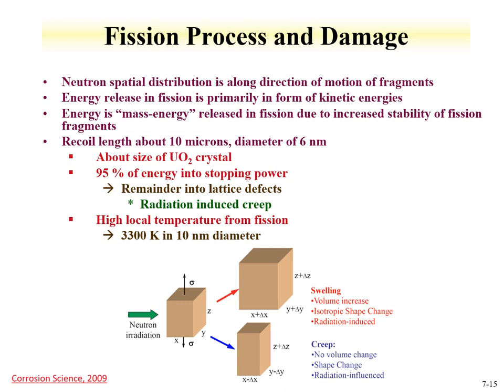Another important aspect of fission is radiation damage. Fission products recoil about 10 microns in UO₂ with a very high local temperature of almost 3000°C in a 10-nanometer diameter region within the fuel. Types of irradiation damage include swelling, where all axes of a material increase, and creep, where shape changes with no volume change. There is significant new research focused on finding materials impervious to swelling and creep from neutron damage.